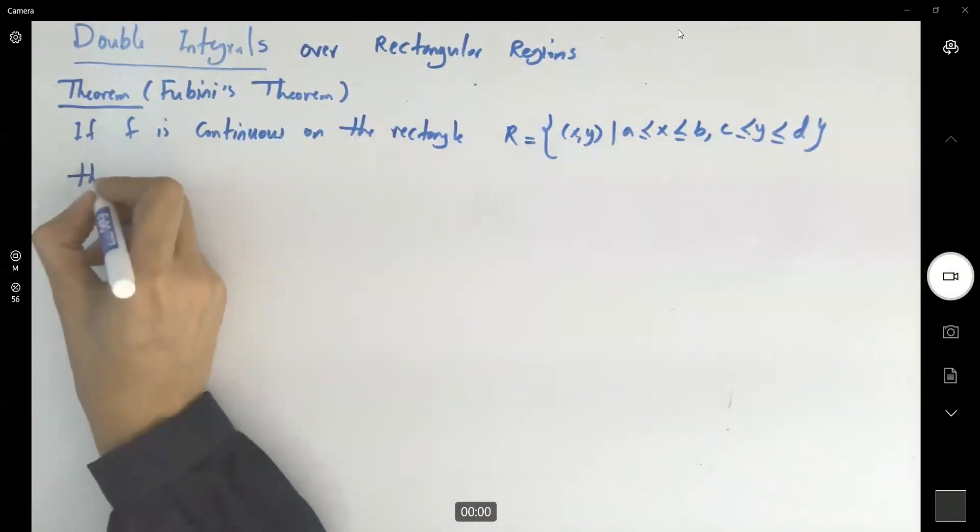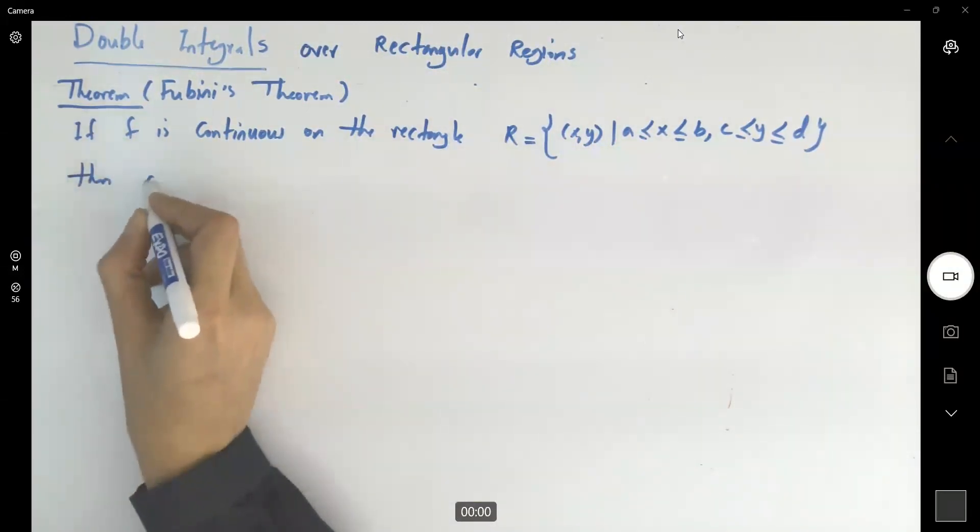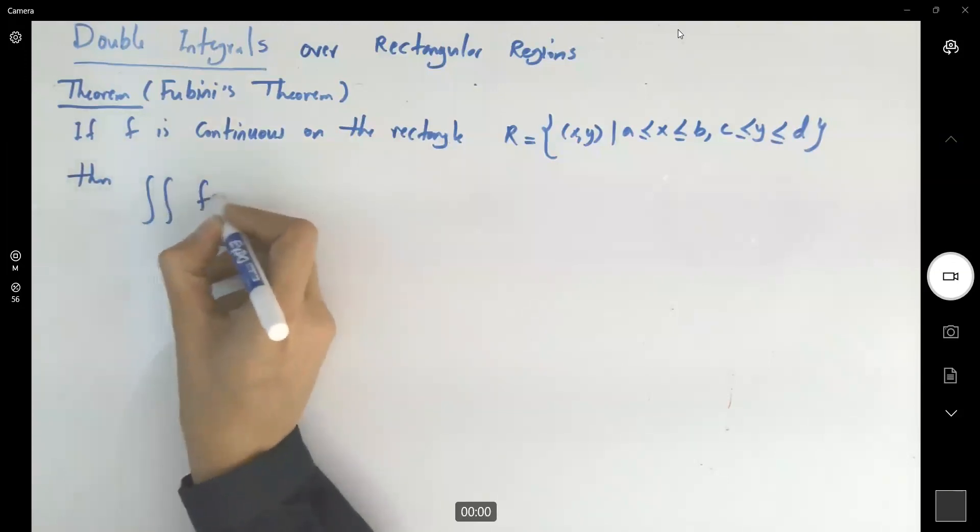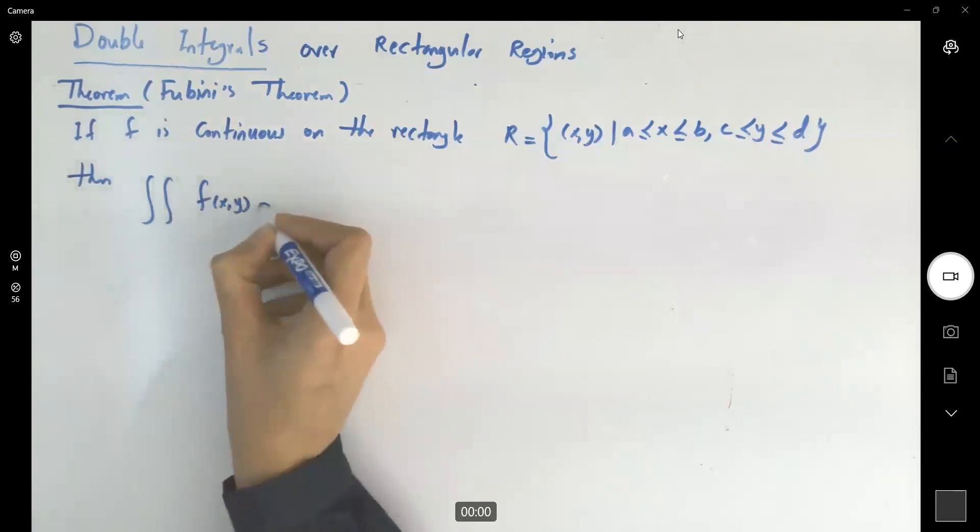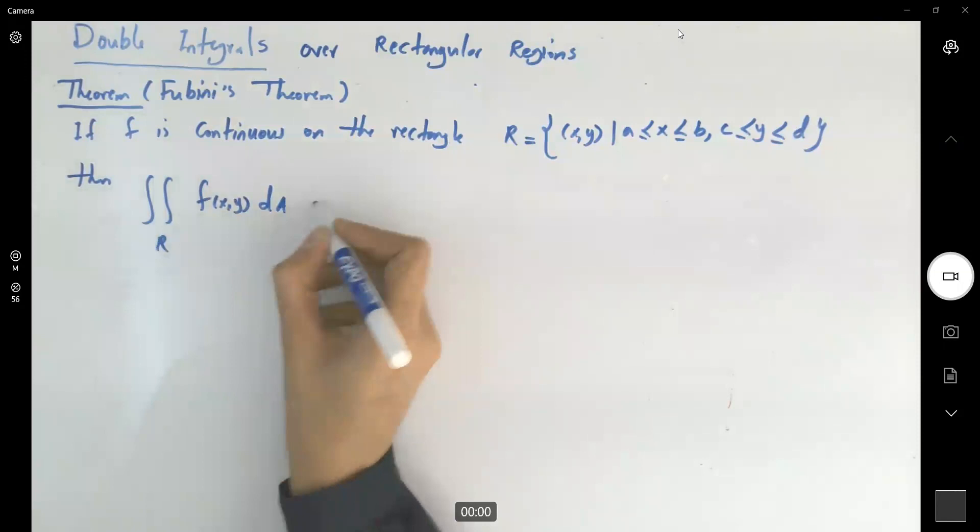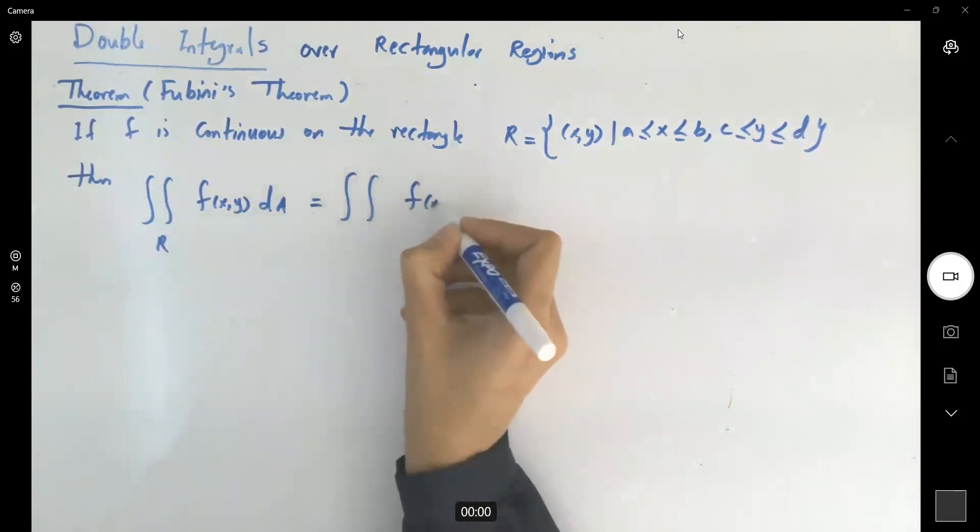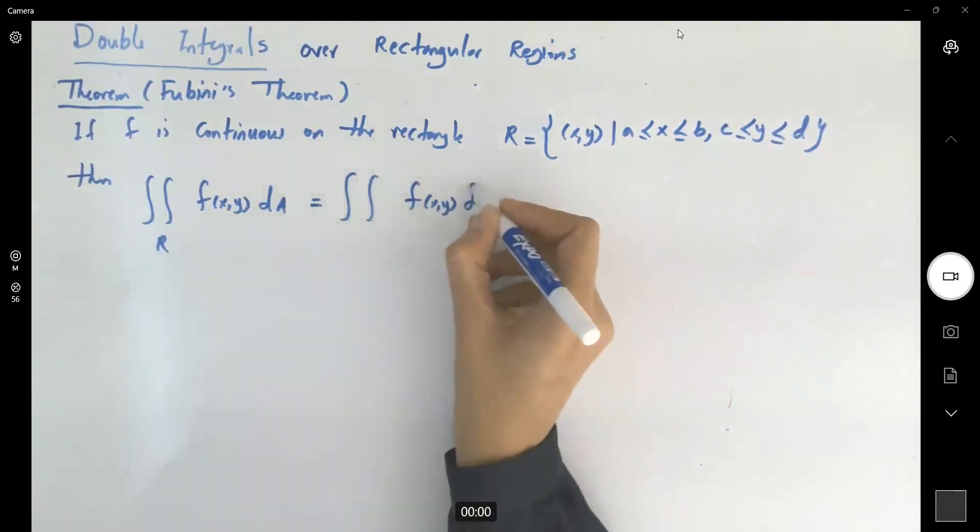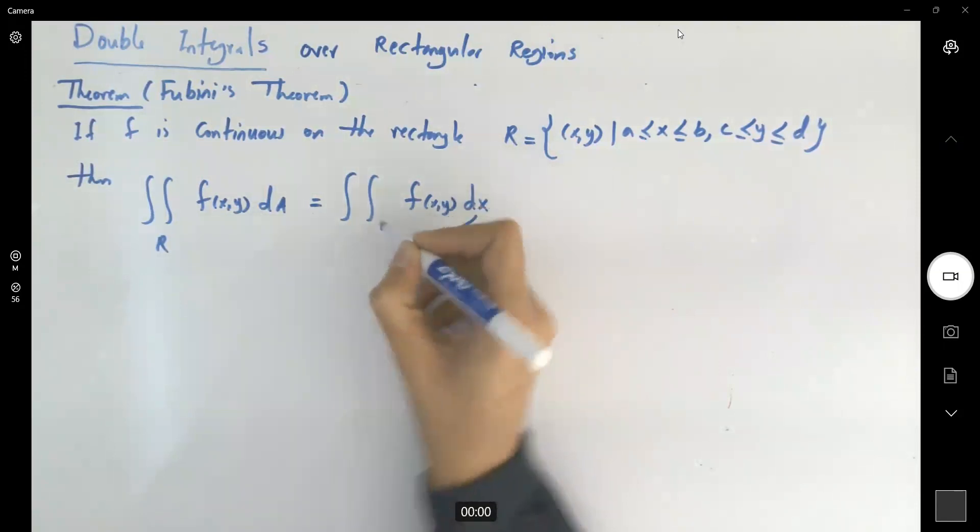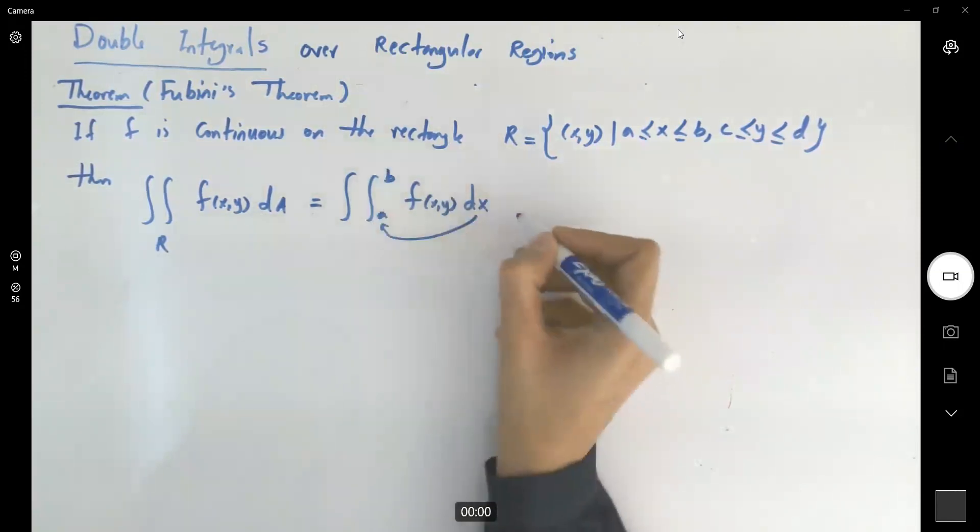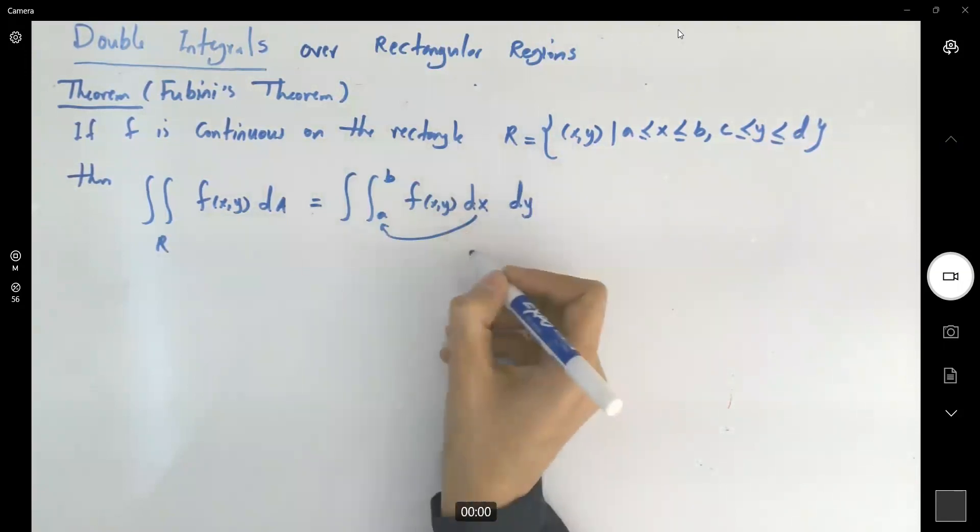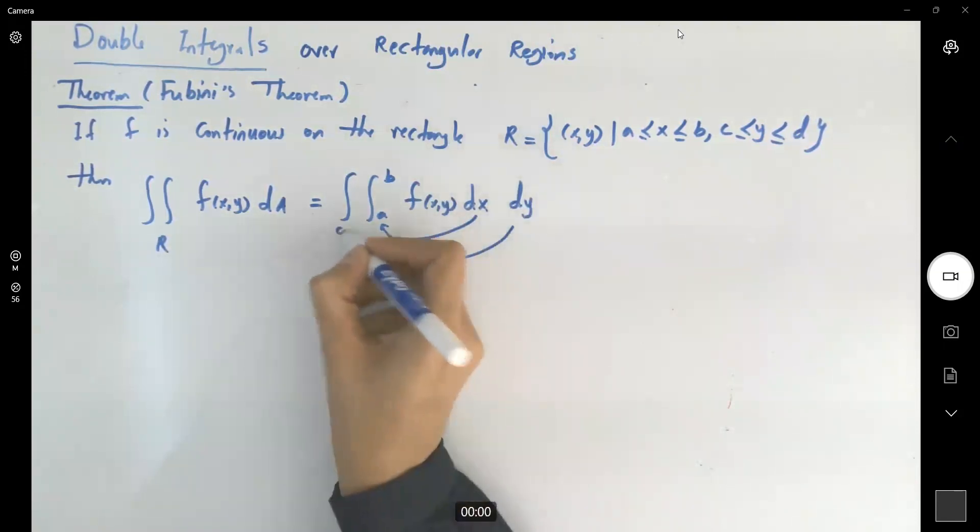Then the double integral of your function over R can be broken down into the integral of f(x,y) with respect to x, while x ranges between a to b, then with respect to y, where y ranges between c to d.